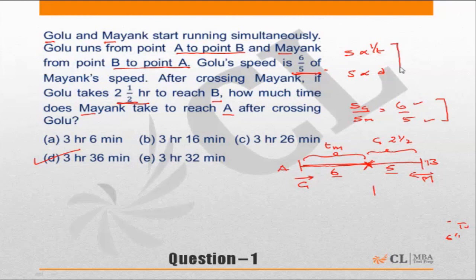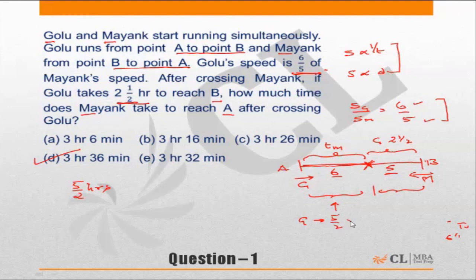Golu took 2.5 hours to cover the distance from the meeting point to B, which is 5 units. So how much time did Golu take to cover the 6-unit distance from A to the meeting point? Time taken by Golu = (5/2) × (6/5), because the distance became 6/5 times larger, so the time also becomes 6/5 times.